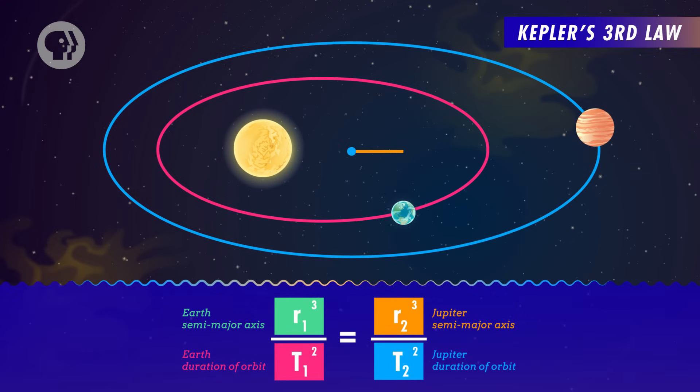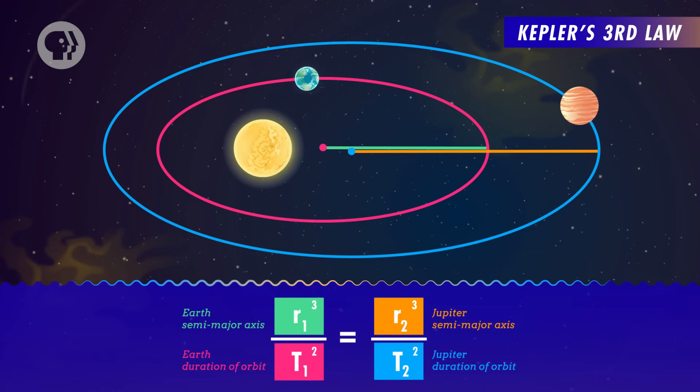His third law is a little more technical, but it's basically an observation about what happens when you take the longest, or semi-major, radius of a planet's orbit, cube it, then divide that by the period of the planet's orbit squared. According to Kepler, that ratio should be the same for every single planet. For every single planet that orbits our Sun, that ratio is either 3.34 or 3.35. Newton was also able to explain why the actual observed orbits in the night sky sometimes deviated very slightly from Kepler's predictions — because the planets and moons were all pulling on each other, and sometimes that pull was strong enough to change their orbits just a little bit.